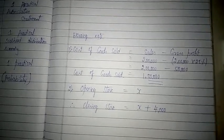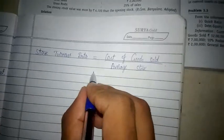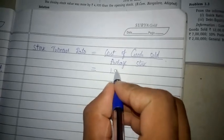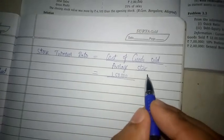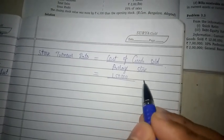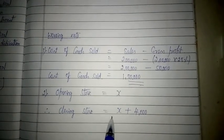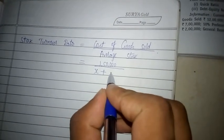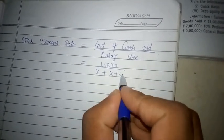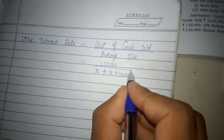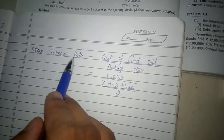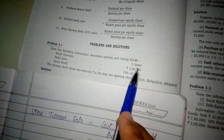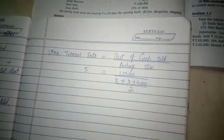Now let us substitute this information into the formula. Cost of goods sold is 1,50,000, divided by average stock, which equals opening stock plus closing stock divided by 2. Here opening stock is x and closing stock is x plus 4,000, so average stock is (x + x + 4,000) divided by 2. The stock turnover ratio given is 5 times, so we write 5 here.